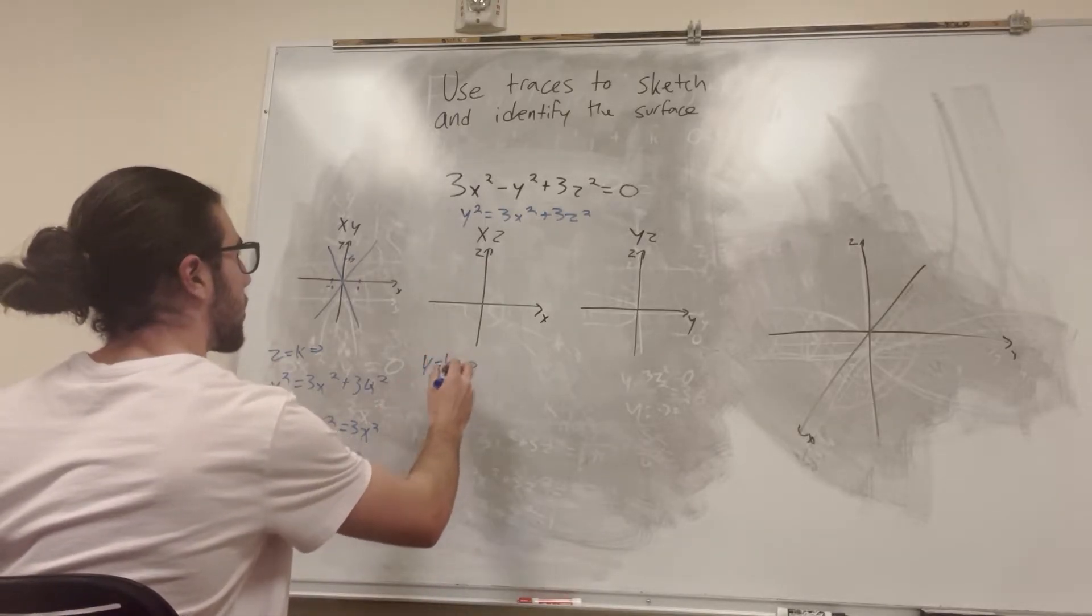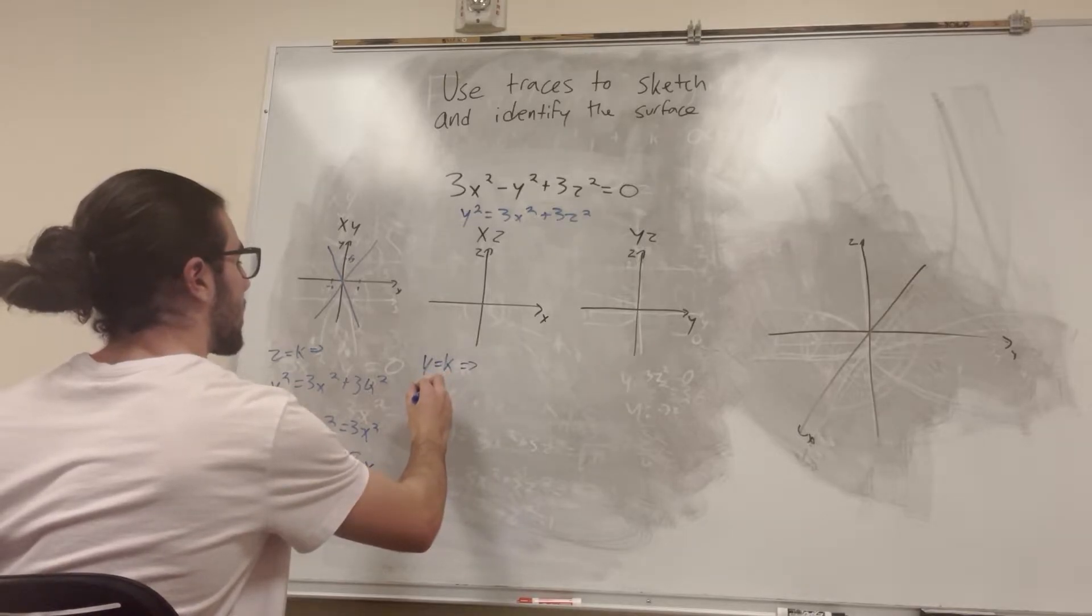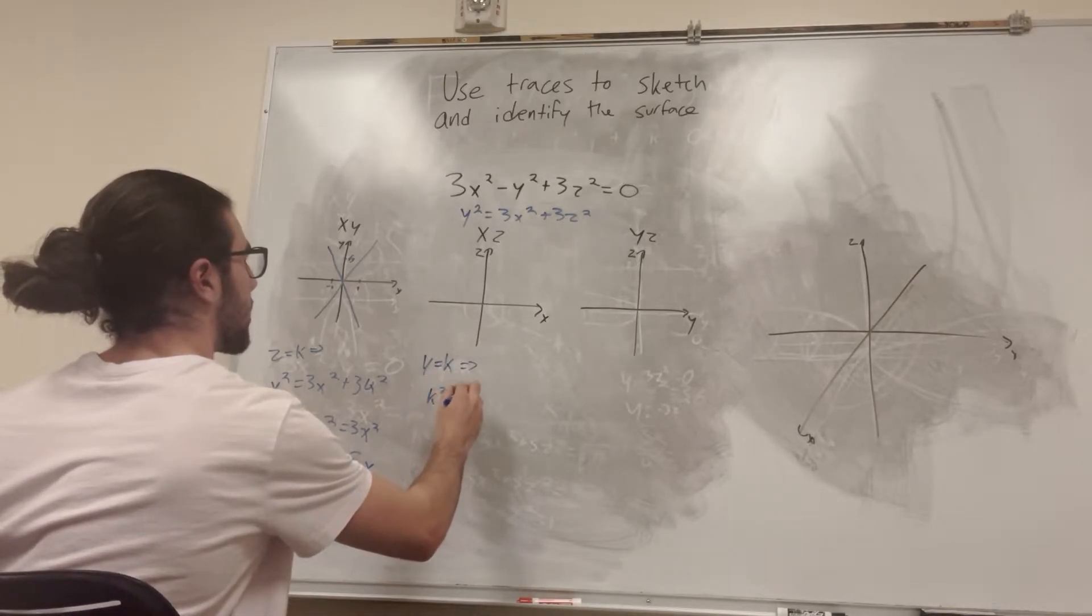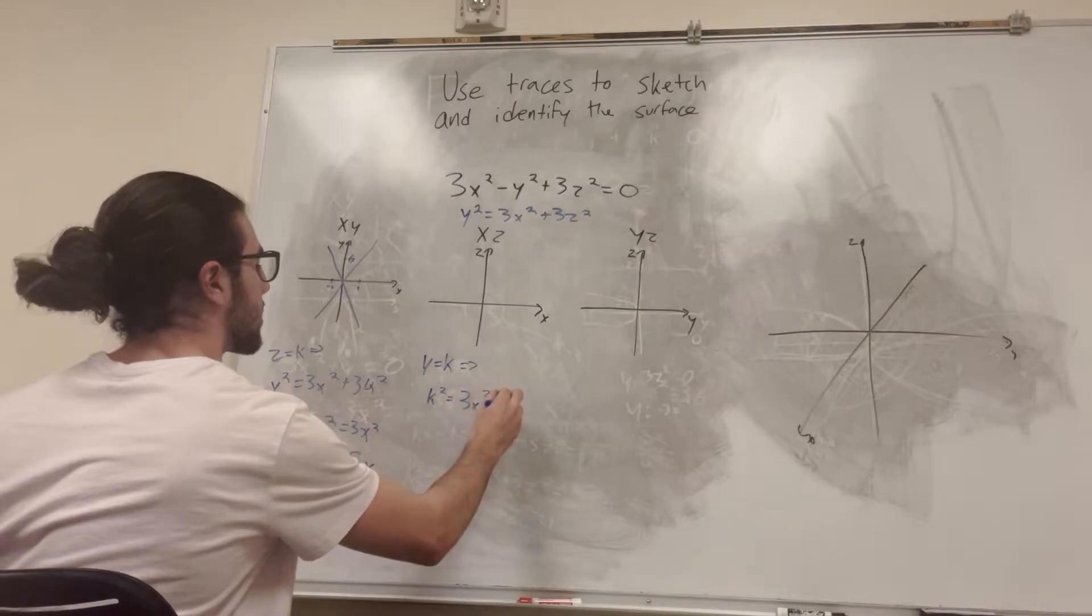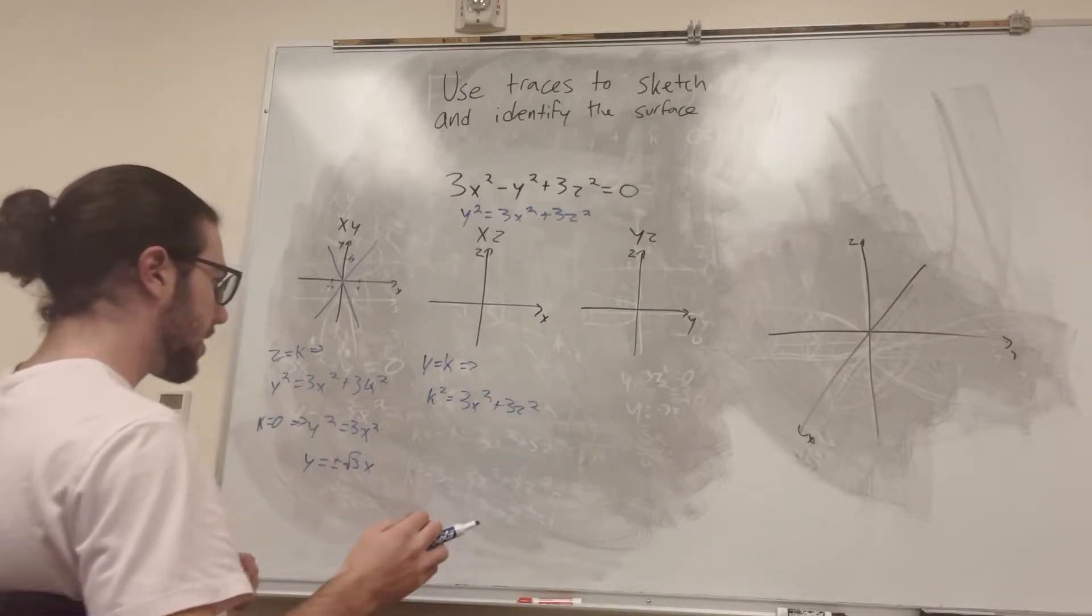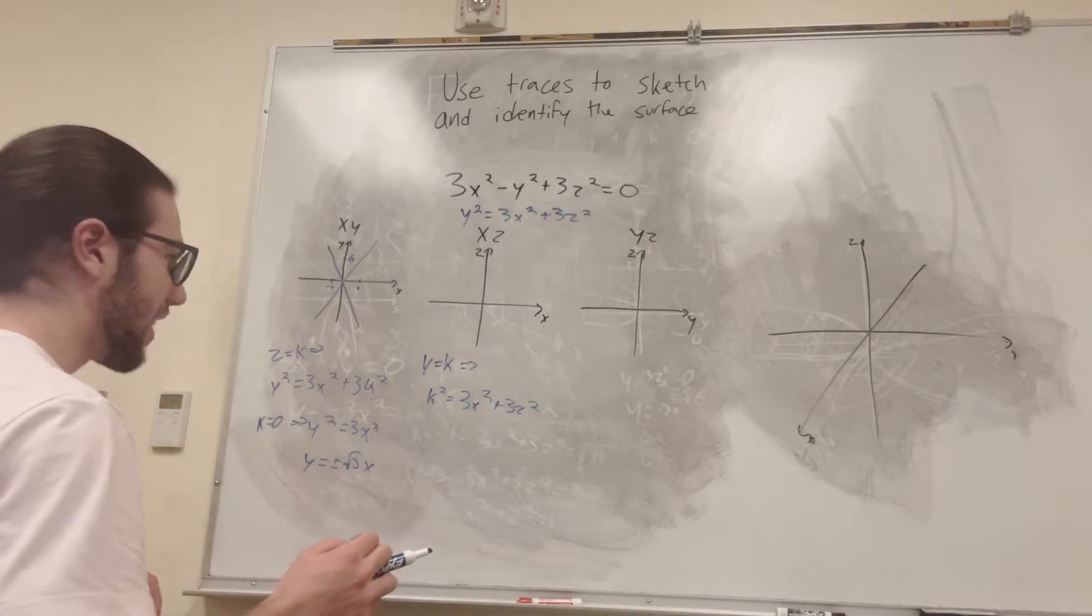Let's see. y is equal to k. So therefore, we have k squared is equal to 3x squared plus 3z squared. So this looks like an equation for a circle. Am I right?